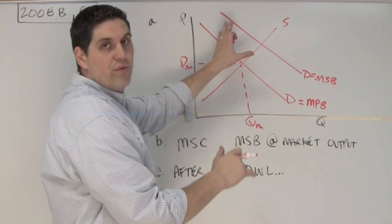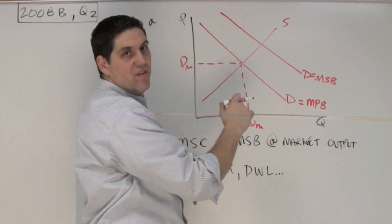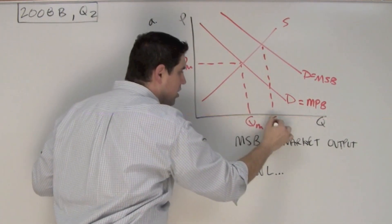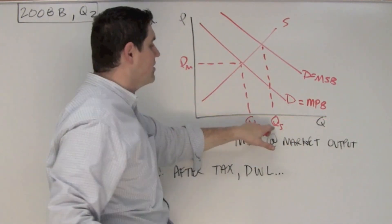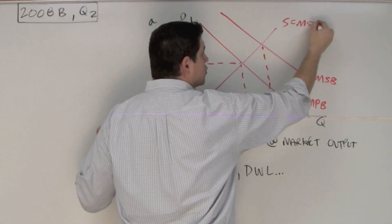Now notice, there's no arrow. This is a second demand curve representing the demand when you factor in those external benefits. The quantity right here is the quantity socially optimal, or the amount that society actually wants, where the marginal social benefit equals the marginal social cost.